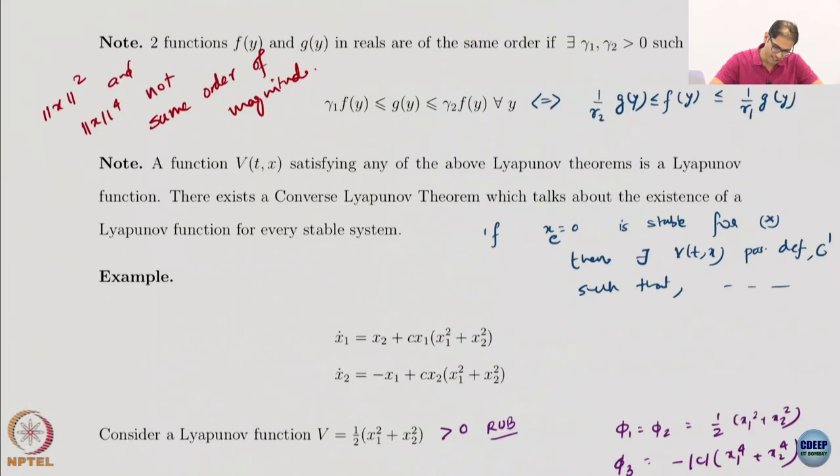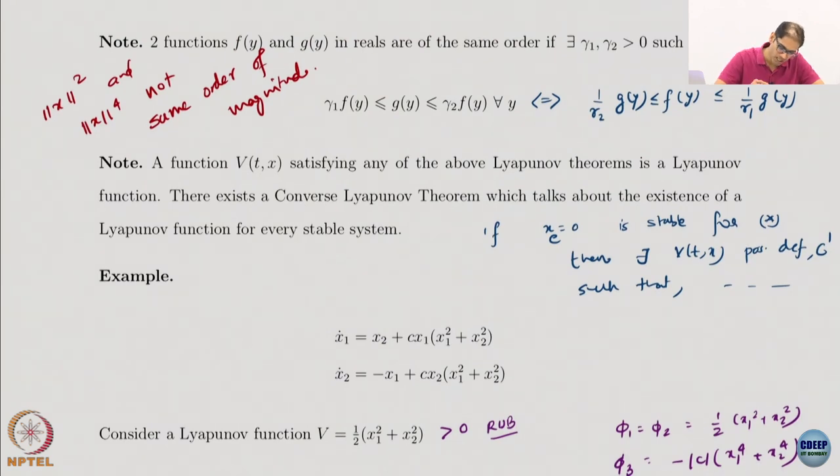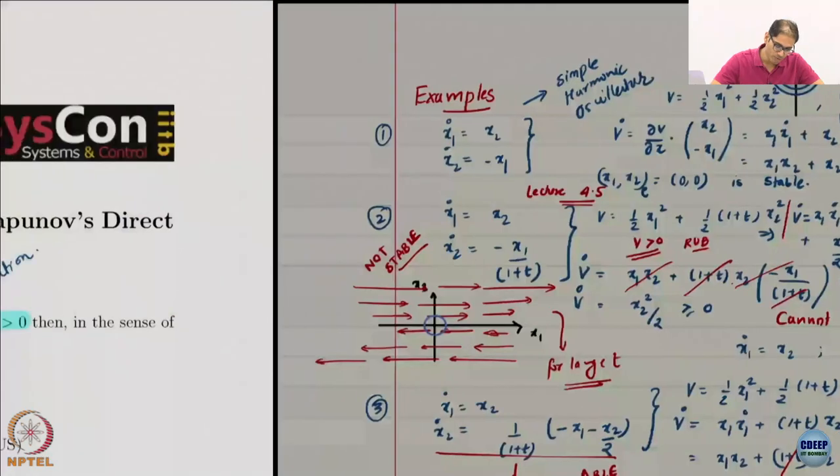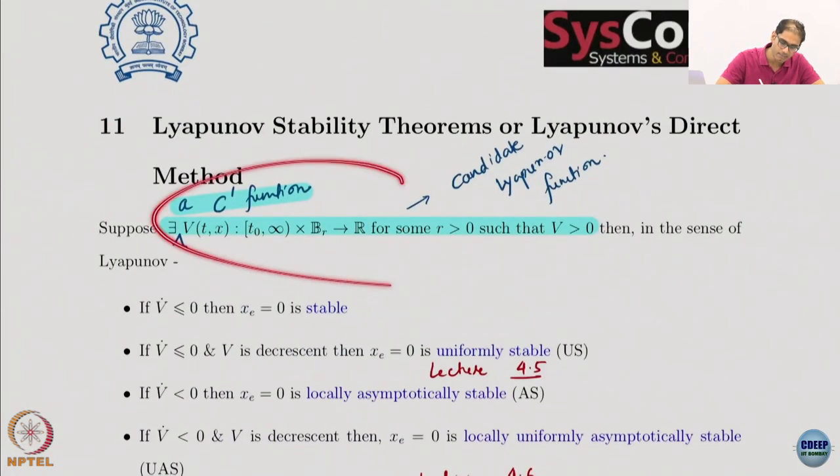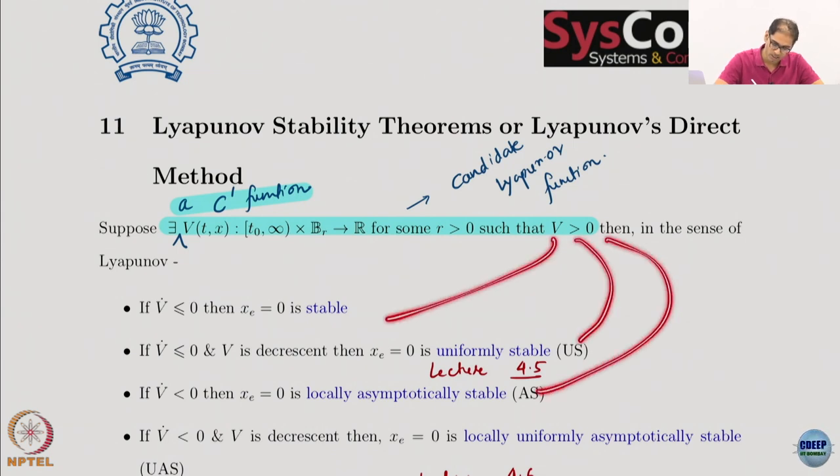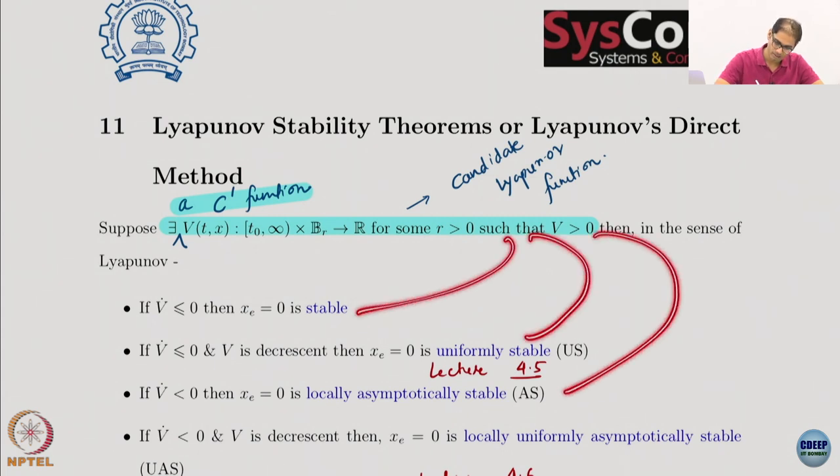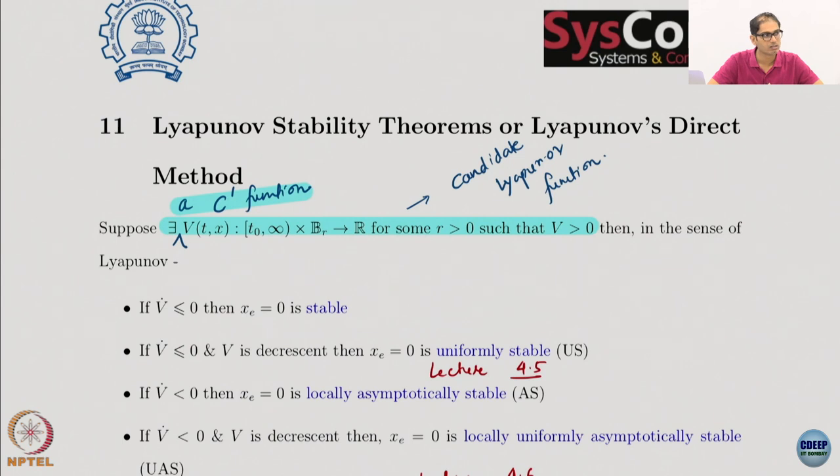Now there is another example here anyway. But before that, I want you to remember that there is also notions of converse Lyapunov theorems, which essentially says that there exists a Lyapunov function for every stable system.